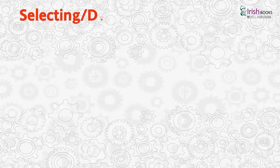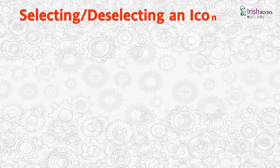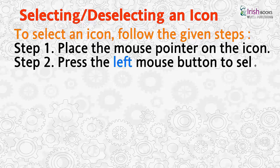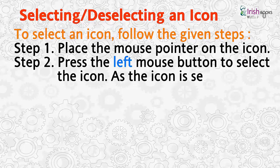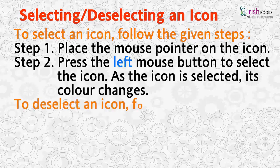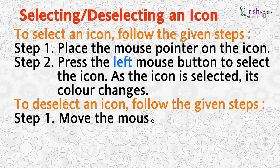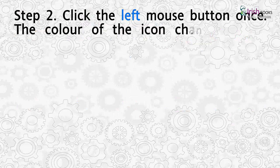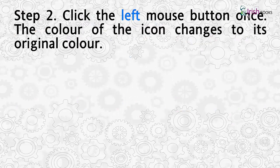Selecting and deselecting an icon: To select an icon, place the mouse pointer on the icon, then press the left mouse button — as the icon is selected, its color changes. To deselect an icon, move the mouse pointer away from the selected icon, then click the left mouse button once — the color of the icon changes back to its original color.